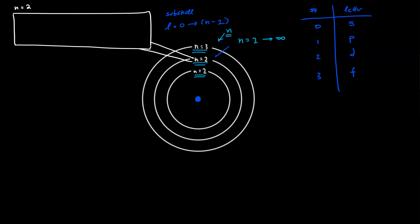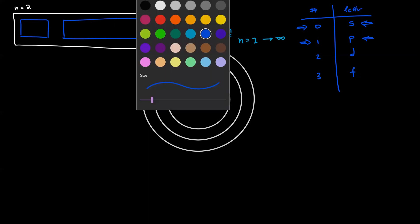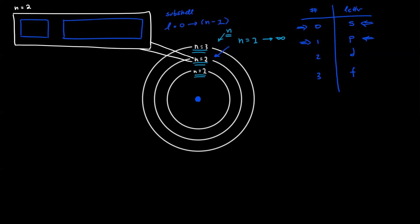If we look at our n equals two energy level, since n equals two and l ranges from zero to n minus one, we know that our l values are going to be zero and one, which means we're going to have an s orbital and a p orbital within this n equals two shell.